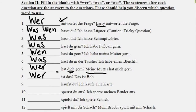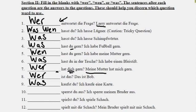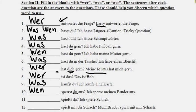Number nine: blank kaufst du? Kaufen is to buy. The answer is Ich kaufe eine Karte — I am buying a ticket. A ticket is a thing, so we say was kaufst du? — What are you buying? Number ten: blank sperrst du aus? Aussperren is to lock out. The answer is Ich sperre meinen Bruder aus — I am locking my brother out. My brother is a person even if I'm locking him out, so we use wen. Wen sperrst du aus? — Whom are you locking out?